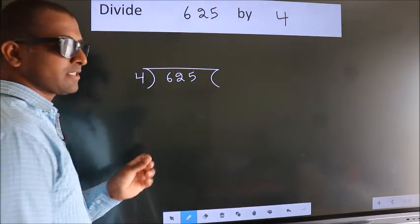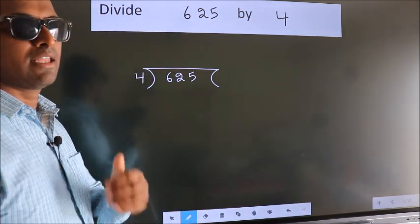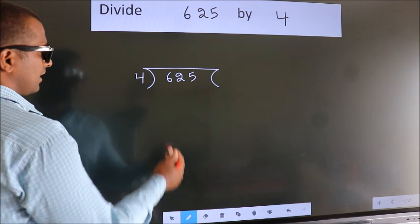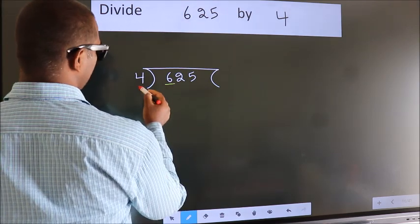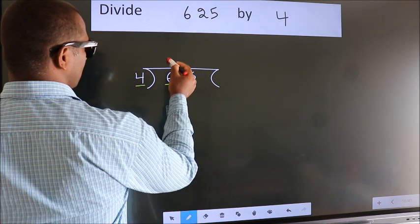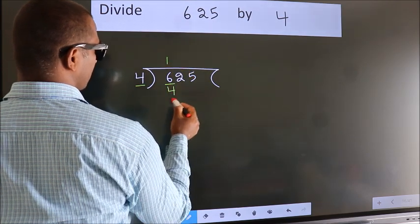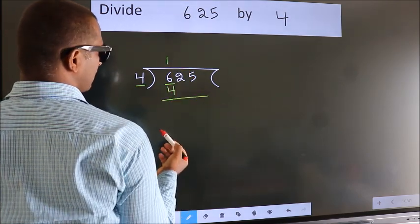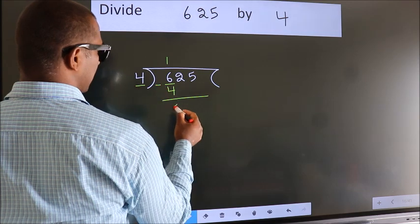This is your step 1. Next, here we have 6, here 4. A number close to 6 in the 4 table is 4 once is 4. Now we should subtract. We get 2.